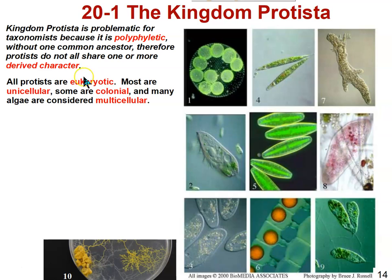They are eukaryotic, and that's one thing that they all share, but they share that characteristic with the other kingdoms — fungi, animalia, and plantae. The combination of two characteristics that identify most protists is that they are unicellular eukaryotes, whereas fungi are mostly multicellular, and all animals and plants are multicellular.